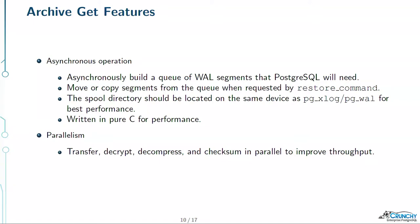PG Backrest checksums everything. When we're doing an archive get to retrieve a file, we re-verify the SHA-1 checksum against the original. If it fails, you've got a problem. Additionally, WAL segments have internal checksums so Postgres can tell if they're corrupt. If PG Backrest syncs a file and then someone corrupts it before we hand it to Postgres, we'd normally re-checksum it, but in this case we know Postgres is going to detect that corruption on its own. The WAL checksums are always built-in — it's the page checksums that are optional and have to be turned on.